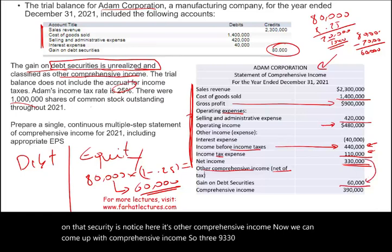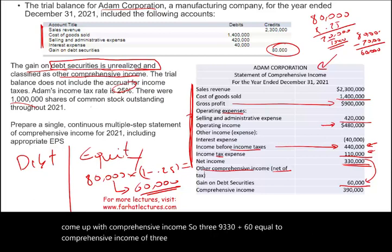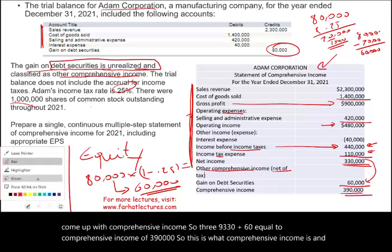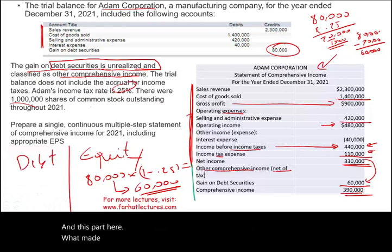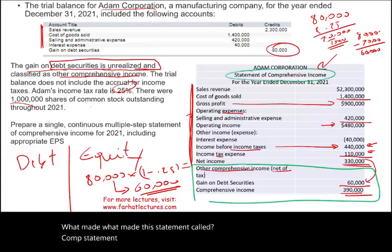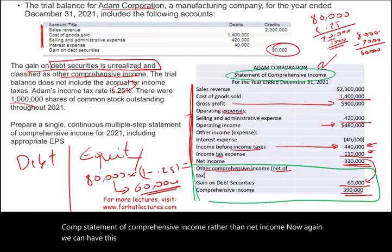We can now compute comprehensive income: net income of $330,000 plus other comprehensive income of $60,000 equals comprehensive income of $390,000. This is what makes this a statement of comprehensive income rather than simply a net income statement. We can also present the income statement and statement of comprehensive income as two separate statements.